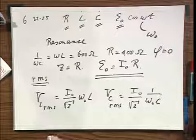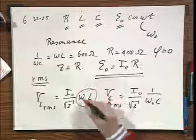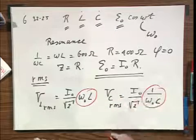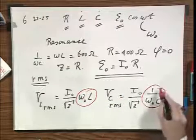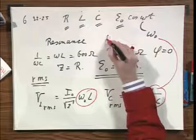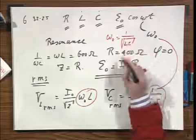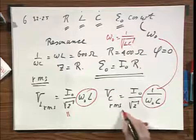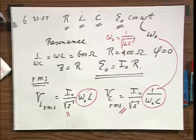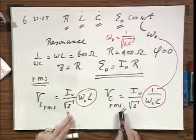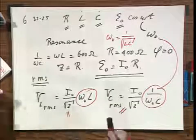And since omega zero L and omega zero C is exactly the same value because we are at resonance, omega zero equals one over the square root of LC, this voltage is exactly the same as this voltage, whatever the answer may be. They are the same. But they are 180 degrees out of phase and that you will no longer see when you read these voltmeters. Keep that in mind.